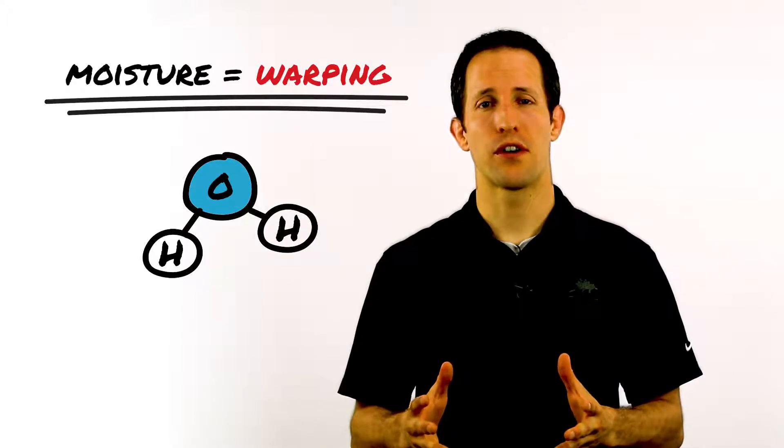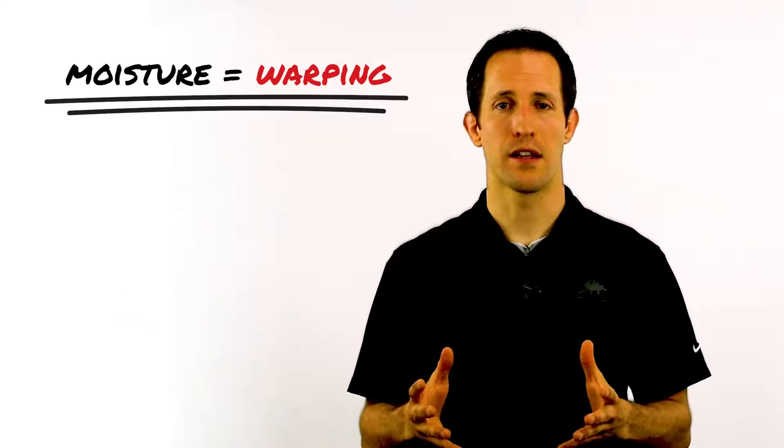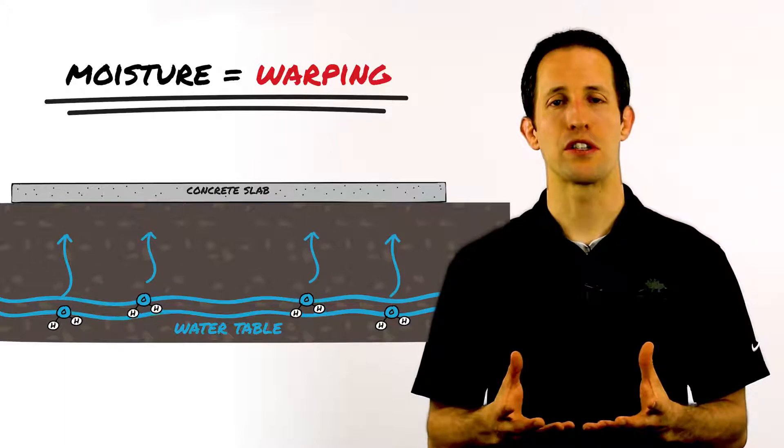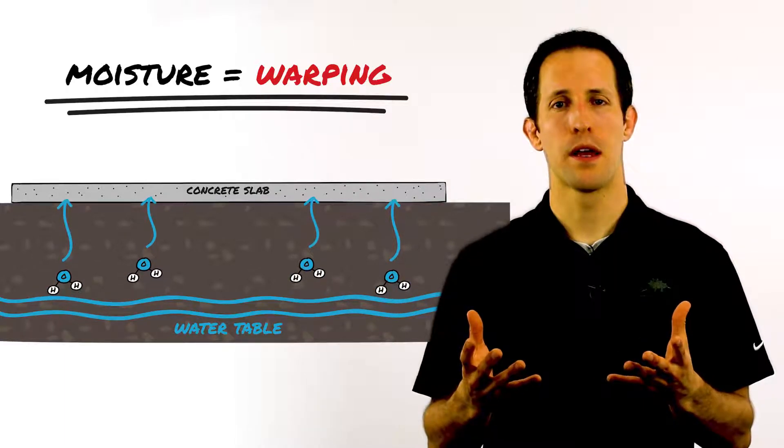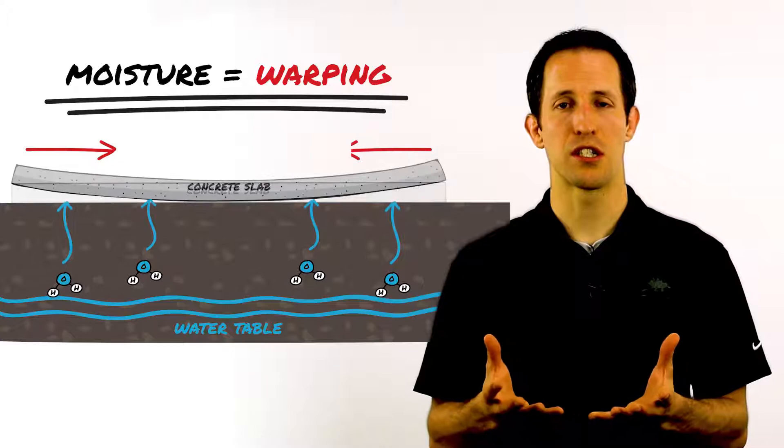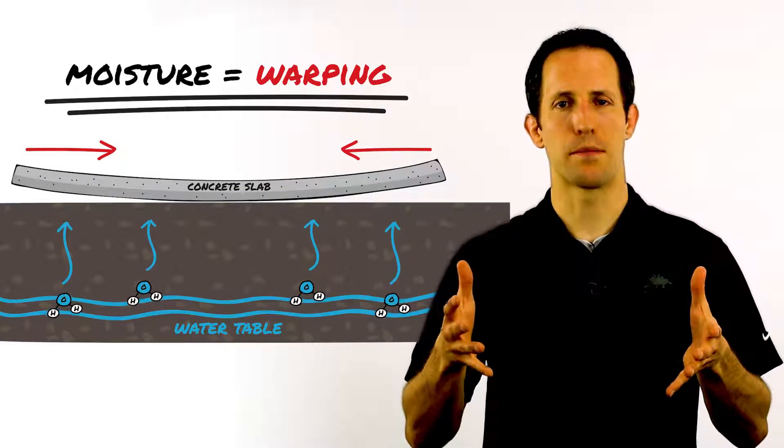Warping, conversely, is caused by differentials or gradients in moisture content. So you may have a more wet or moist slab on the bottom, a drier slab on the top, and that difference will induce different volume changes between those two areas and cause the slab to curl as well. Again, warping is technically the term for that, but we use curling and warping interchangeably. I'll be using curling going forward.